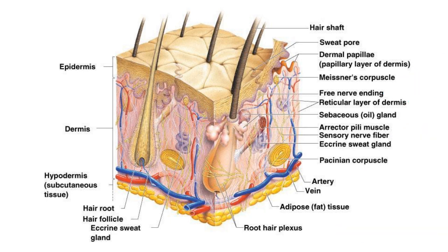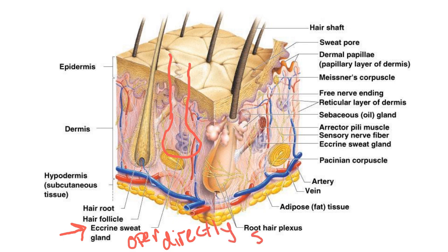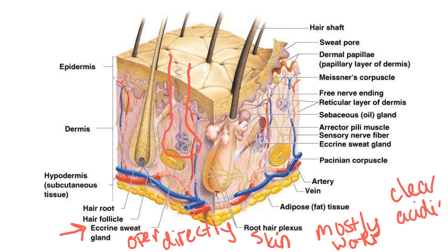Let's look at what some of the skin appendages do. We have a couple of different kinds of sweat glands and oil glands in our skin. The first is the eccrine sweat gland. These are our most common sweat glands — they cover almost all of the body and open directly onto the skin surface through a pore. They secrete a mostly water-based, clear, slightly acidic substance.